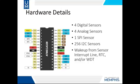Two interrupt lines are used: one for the transceiver, and the other is shared between all sensor channels and the real-time clock. Each node is capable of receiving a wake-up signal from the sensor interrupt line, the real-time clock's alarm feature, the internal watchdog timer, or a combination of several of these.